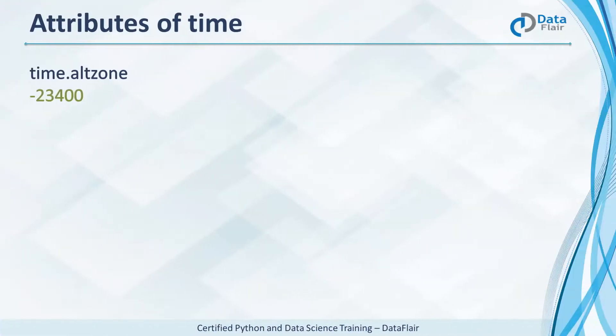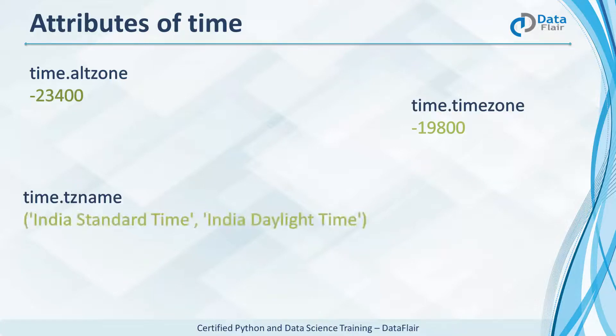The time module has some attributes. ALT zone returns the local DST time zone's offset with positive values for locations west of UTC and negative values otherwise. Time zone is like ALT zone without DST. And TZ name gives us the name of the local time zone with and without DST.